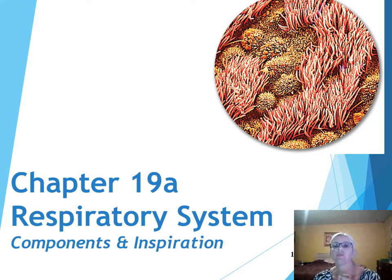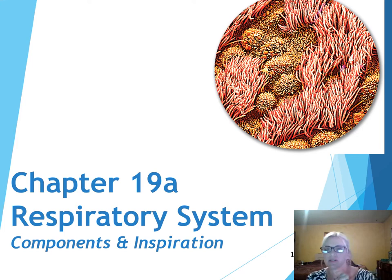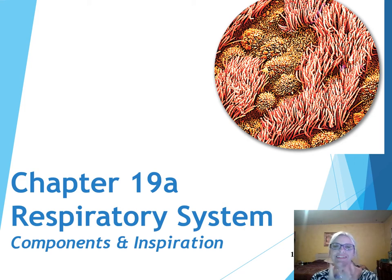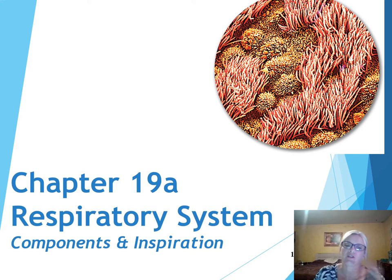This picture here up at the top right is tracheal lining, and this consists of those mucus-secreting goblet cells, which are brown. The red portions there are ciliated epithelium, and you can almost picture those flowing back and forth and sweeping the mucus out.